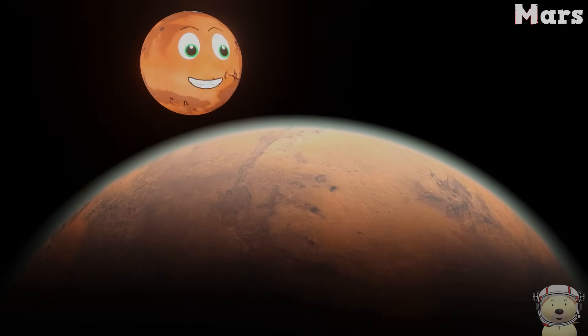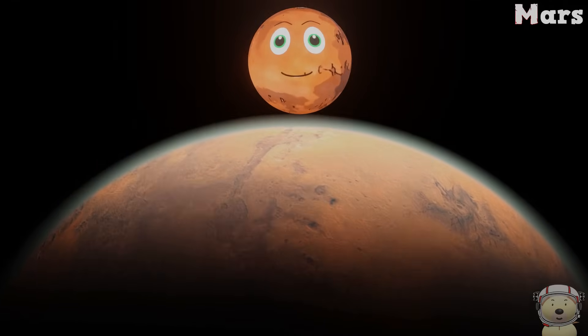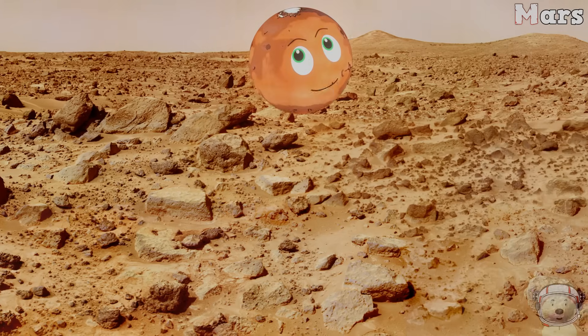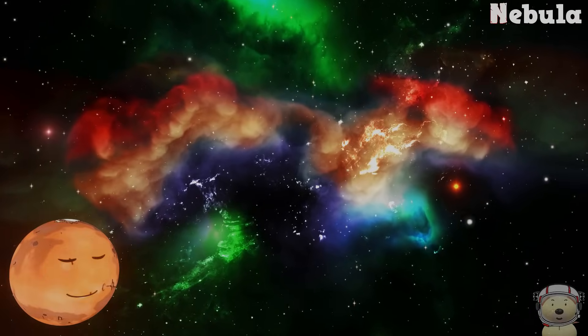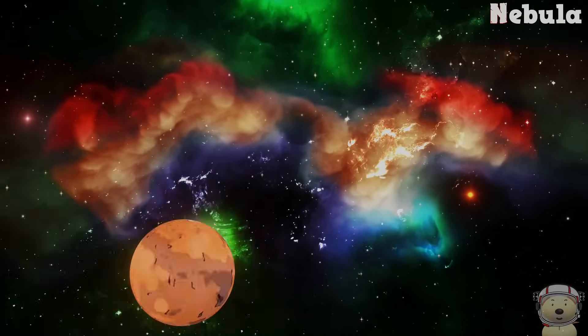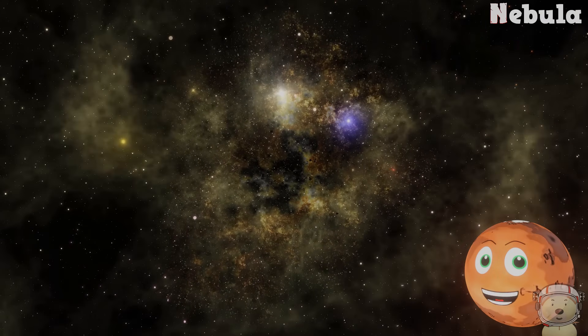M is for Mars, I'm not a mystery. On here you'll find rovers that you landed on me. N is for nebula, clouds of gas and dust. To create new stars, this is a must.